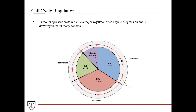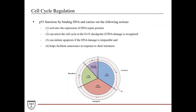P53 is probably the most important and high-yield regulator of cell cycle progression. It's considered a tumor suppressor protein, and because of its major role in cell cycle progression, it can be downregulated in many cancers. If you're not able to halt the cell cycle when DNA damage is detected, that can lead to uncontrolled cell division and cancer. P53 functions by binding to DNA, acting as a transcription factor.